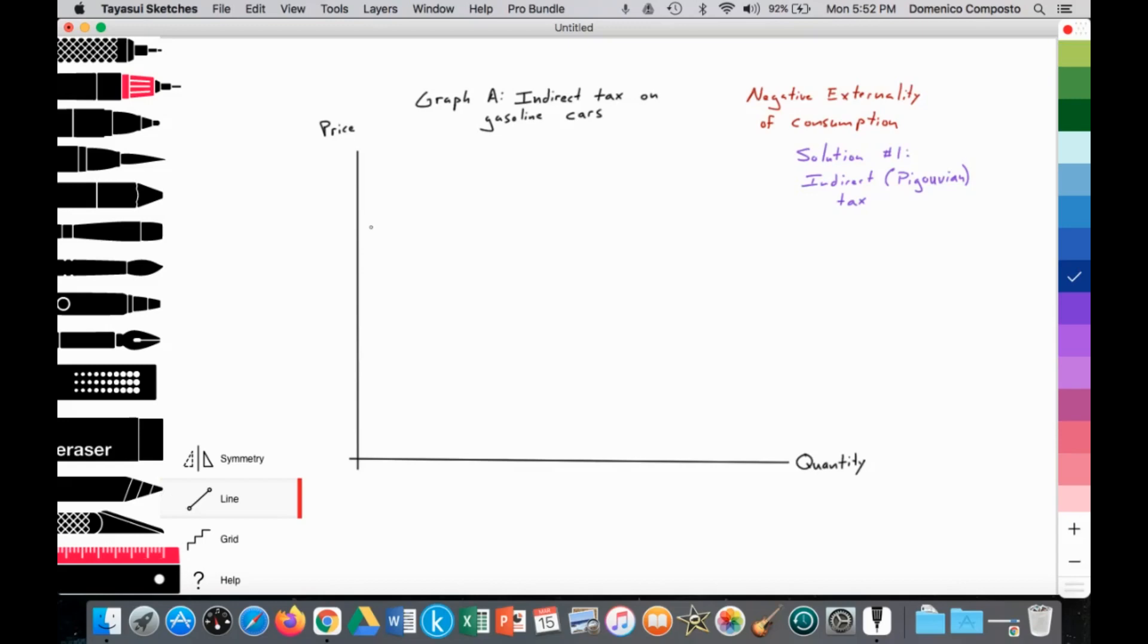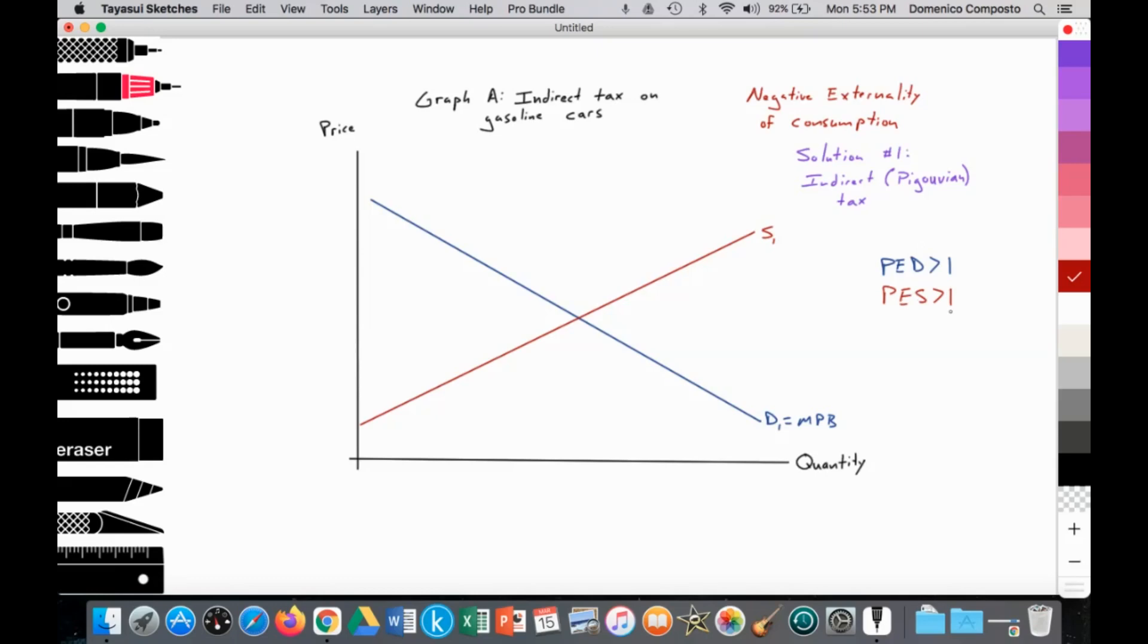All right, so the demand we're going to assume is fairly elastic, because this is a luxury good. So we will draw a fairly elastic demand curve. D1 equal to the marginal private benefit of consumption, and the supply curve we're also going to state is going to be fairly elastic, due to it being a manufactured good. Not necessarily with high-end exotic cars, they're fairly custom built, but let's just assume that. All right, so in both cases, we're going to assume that the PED for the demand curve is greater than one because it's a luxury good, and we're going to assume that the PES for cars is also greater than one due to the fact that it's a manufactured good.